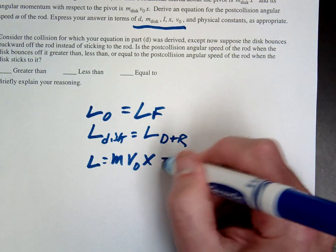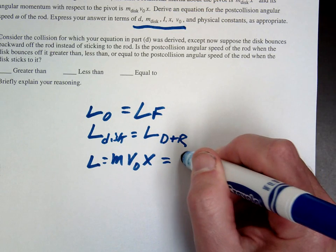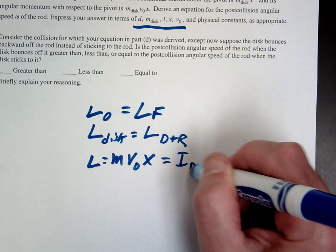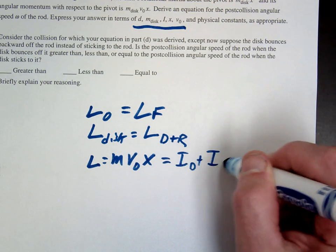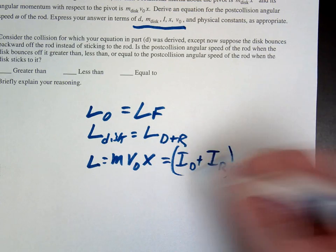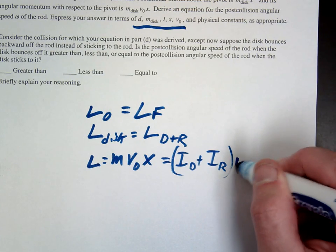Now afterwards, they do combine. So this would be the I for the disc plus the I for the rod times omega afterwards.